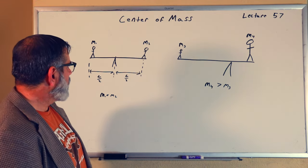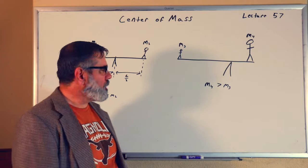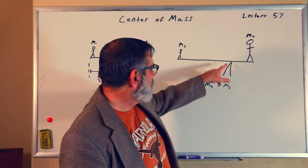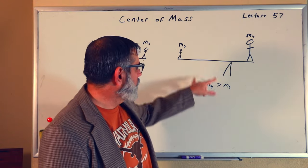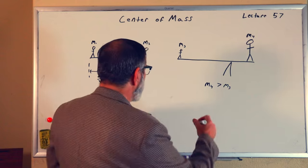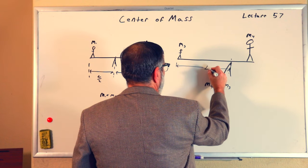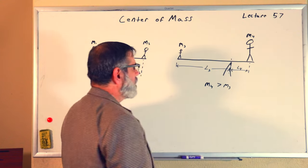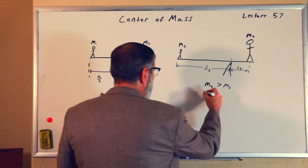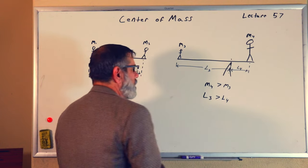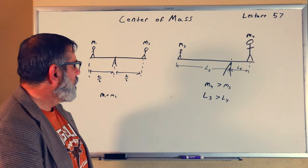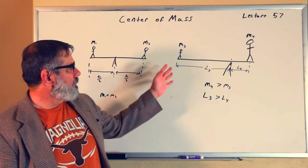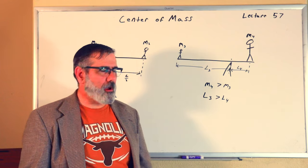We've got this idea of masses, but we also have this idea of distances. What's different in these two pictures: this distance from the center point or balance point is greater than this distance. If I call this distance L3 and this distance L4, we can see that L3 is greater than L4. There's something important about distance that changes the equation — what brings things into balance.